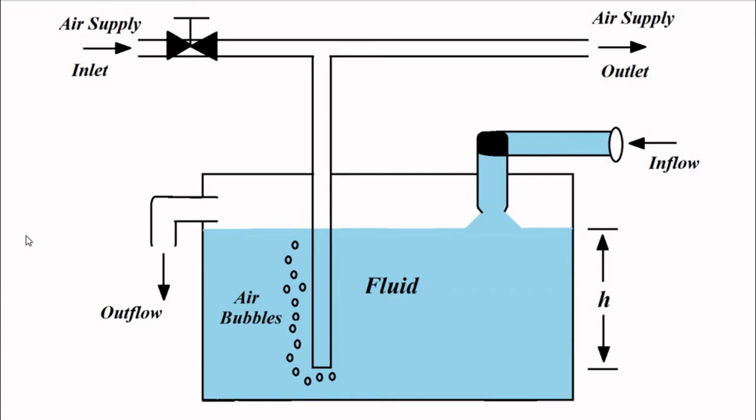The extra setup that is done is this T-shaped structure, T-shaped pipe with the regulating valve. Through this T-shaped pipe, air pressure or air at a certain pressure is supplied into this tank, which creates air bubbles or pressure in this tube.